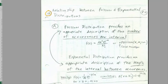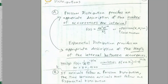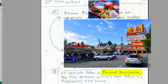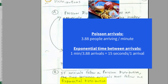We want to talk about the relationship between Poisson and exponential distributions. If the arrivals follow a Poisson distribution, the time between arrivals must follow an exponential distribution. We'll look at our Dick's Hamburger example — that's the one where we had 3.88 people arriving per minute. That's the Poisson, counting people over a particular interval.